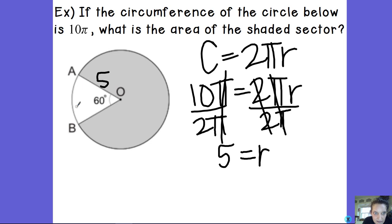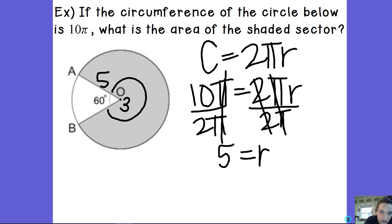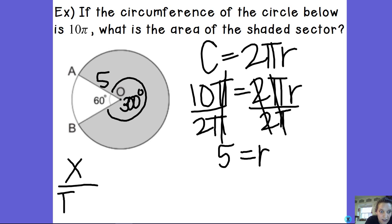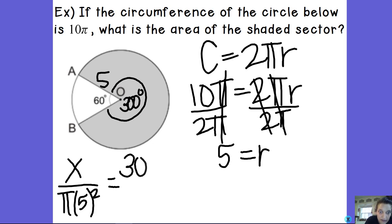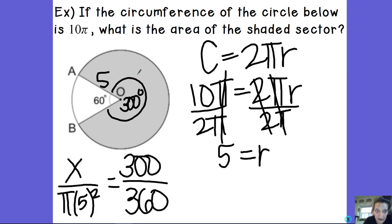The white sector is 60 degrees, and all the way around is 360 degrees, so I can find the angle of the shaded sector by doing 360 minus 60, which is 300 degrees. So the shaded sector has an angle of 300 degrees. I'm going to call the area of the shaded sector x. So: x over pi r squared (the area of the whole circle, with radius 5) equals 300 over 360.